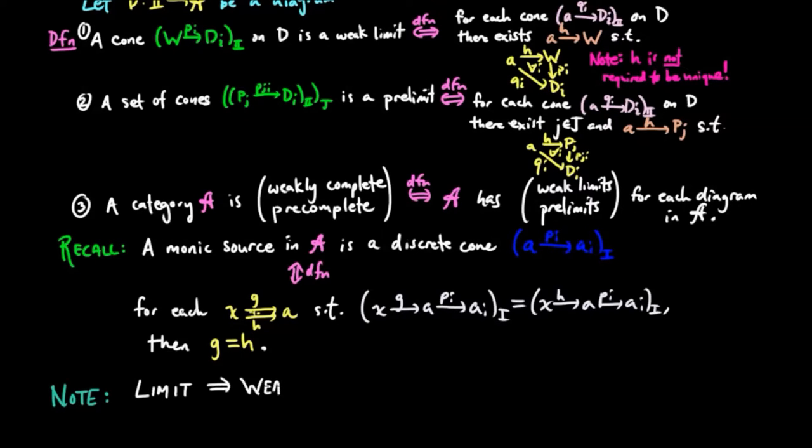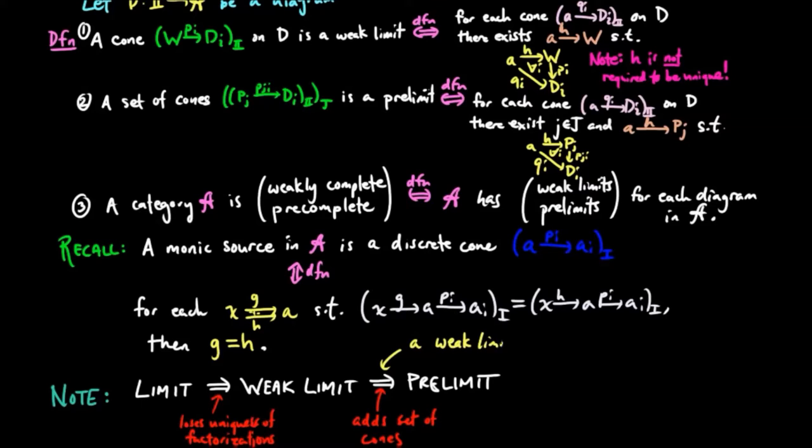Let's note that limits are weak limits, which are pre-limits. A limit is a weak limit with uniqueness, and a weak limit is a pre-limit where J is just a singleton set.